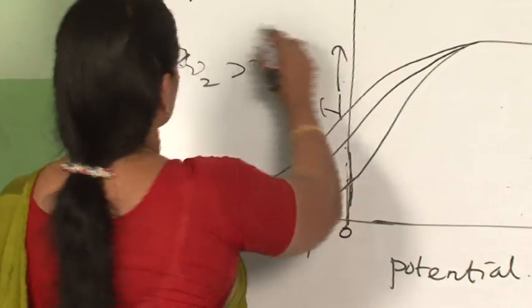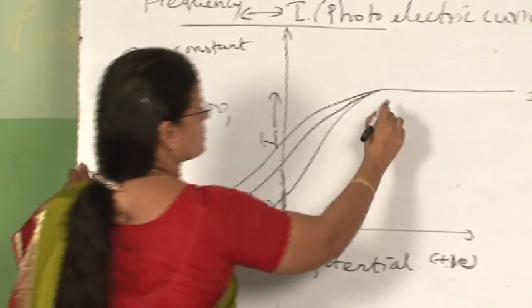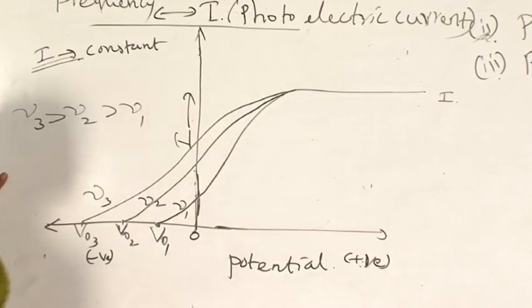In this graph, since we keep intensity constant, the saturation current will remain the same.